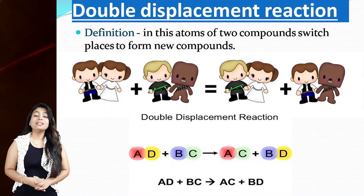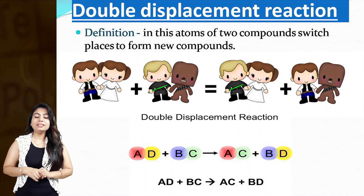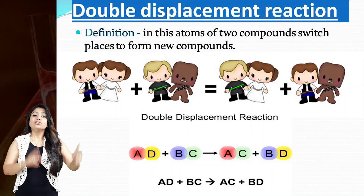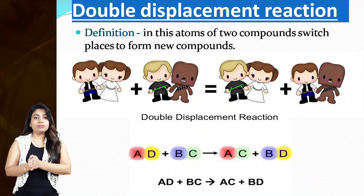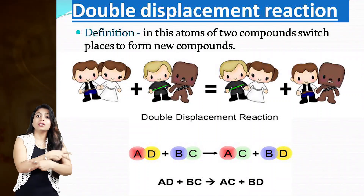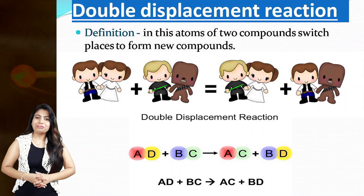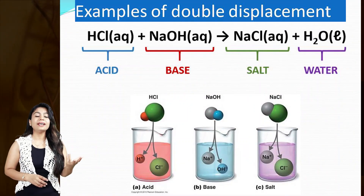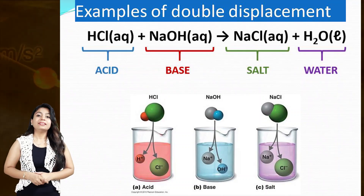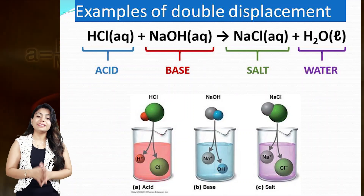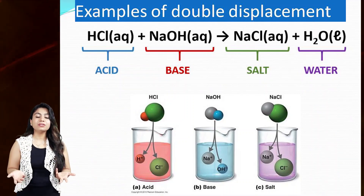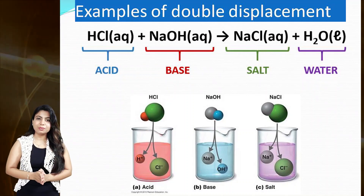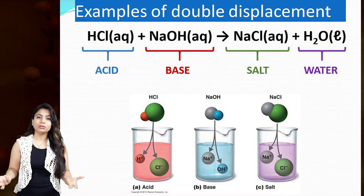The last category is double displacement reaction. Here the atoms of two compounds switch their positions. On screen, two couples switch their places and a new bond is formed. For example, hydrochloric acid and NaOH (sodium hydroxide): the atoms switch positions and the product is NaCl — common salt that we use in our diet — and water is released. This is the example of double displacement reaction where they switch places and we get common salt as the new product.